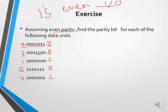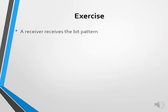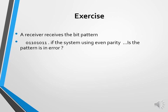For the remaining data units: where the count of 1s is even, the parity bit is 0; where the count of 1s is odd, we add a 1 to make it even, so the parity bit is 1. A receiver receives the bit pattern 01101011. Counting the 1s: there are five 1s. If the system is using even parity, the number of 1s should be even. Since we have five (an odd number), yes, the pattern is in error — because in even parity we must have an even number of ones.